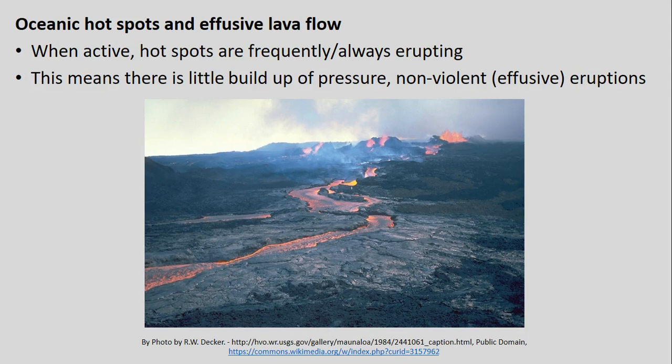We're getting this kind of low-pressure, non-violent — in terms of effusive — outpouring of lava onto the Earth's surface, as shown by the example here, probably something you're familiar with from pictures or videos. It's not the very large, explosive type of eruptions that we'll come to look at in the Cascade Mountains.